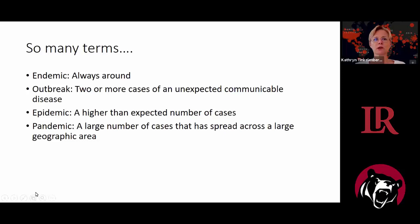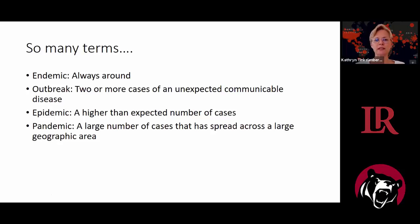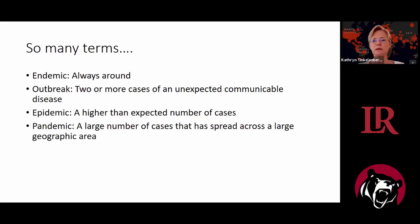There are many terms you hear when we start talking about infectious and communicable diseases. Endemic means it's always around — within a given period of time, usually a calendar year, you can see cases of this disease. Flu is endemic; we see it every year. There are parts of the world where cholera is endemic, but it is not endemic in the United States.